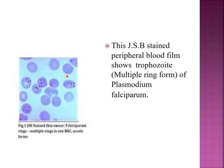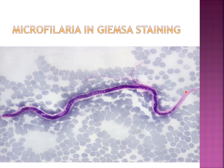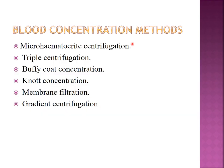Giemsa staining can be done and fixation of smear is required. Microfilaria in Giemsa staining shows arrangement of nuclei properly. There are blood concentration techniques similar to stool concentration, including micro-hematocrit, triple centrifugation, buffy coat, Knott's technique, membrane filtration, and gradient centrifugation. If the number of parasites is low and they cannot be identified in direct blood film, concentration methods are used for diagnosis.